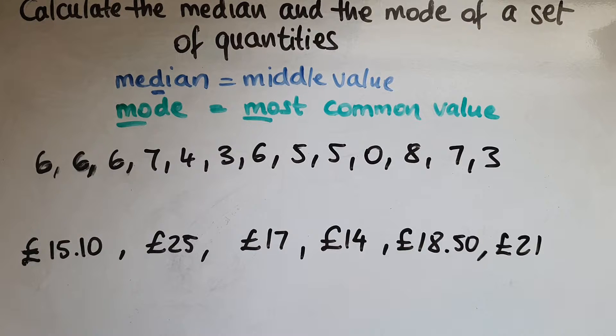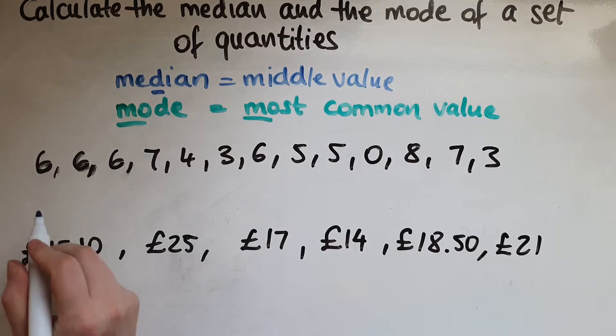So we'll start with the median of these values. These are the scores out of 10 in a math test for a class. And what we're going to do to work out the median, we're just going to put them in order from the highest to the smallest, to the lowest, or from the lowest to the highest, it doesn't really matter. I'll just go for the highest to the lowest.